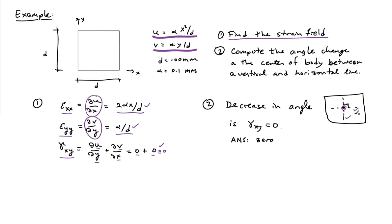Now I look at this 90 degree angle between a horizontal line and a vertical line. Well, that's nothing other than gamma xy. But gamma xy is 0 in this case. So my answer is there's 0 angle change at the point of interest between the two lines that I defined.